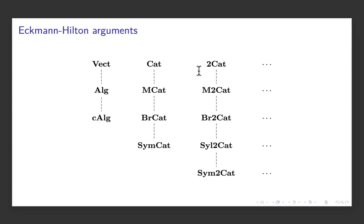A similar game is played at the two-categorical level. Starting with a two-category and adding a monoidal structure gives a monoidal two-category. Adding another layer gives a braided monoidal two-category. A further layer gives a sylleptic two-category. And when four monoidal structures are compatible with each other, it stabilizes and we get a symmetric monoidal two-category.